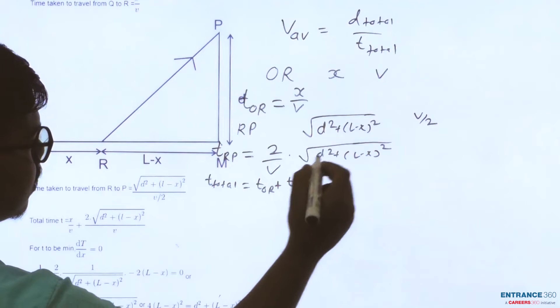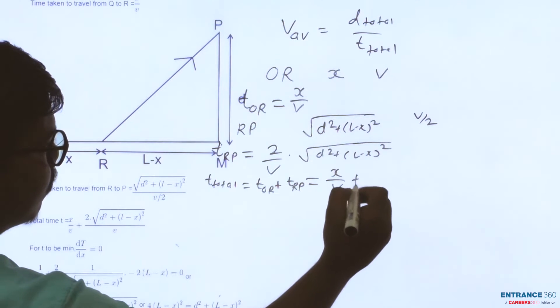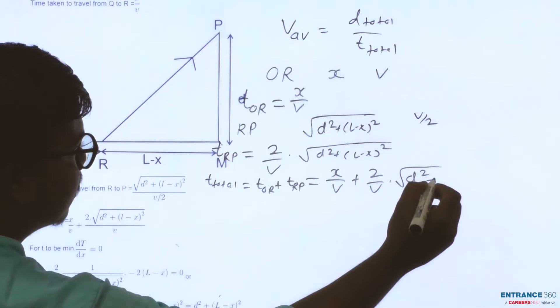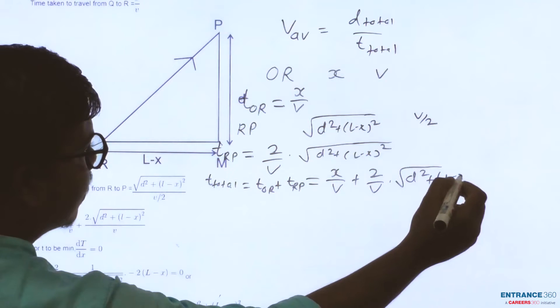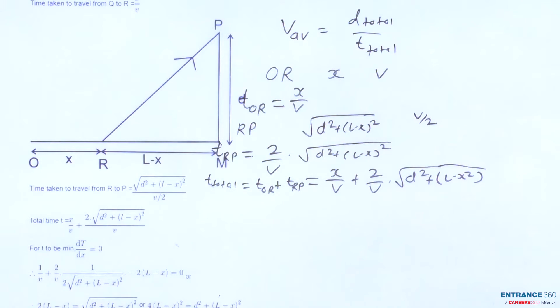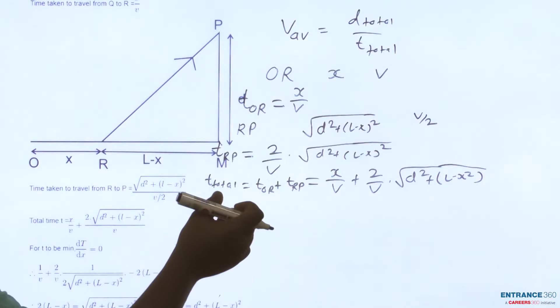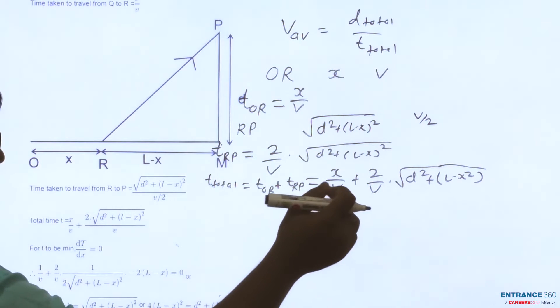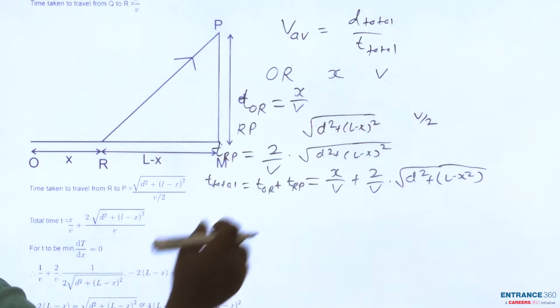In the question we want to find the value of RM such that time taken is minimum. For any quantity to be minimum, we know that if dT/dx equals zero, then for the corresponding value of X the time taken will be minimum. So let's find out for what value its differentiation will become zero.